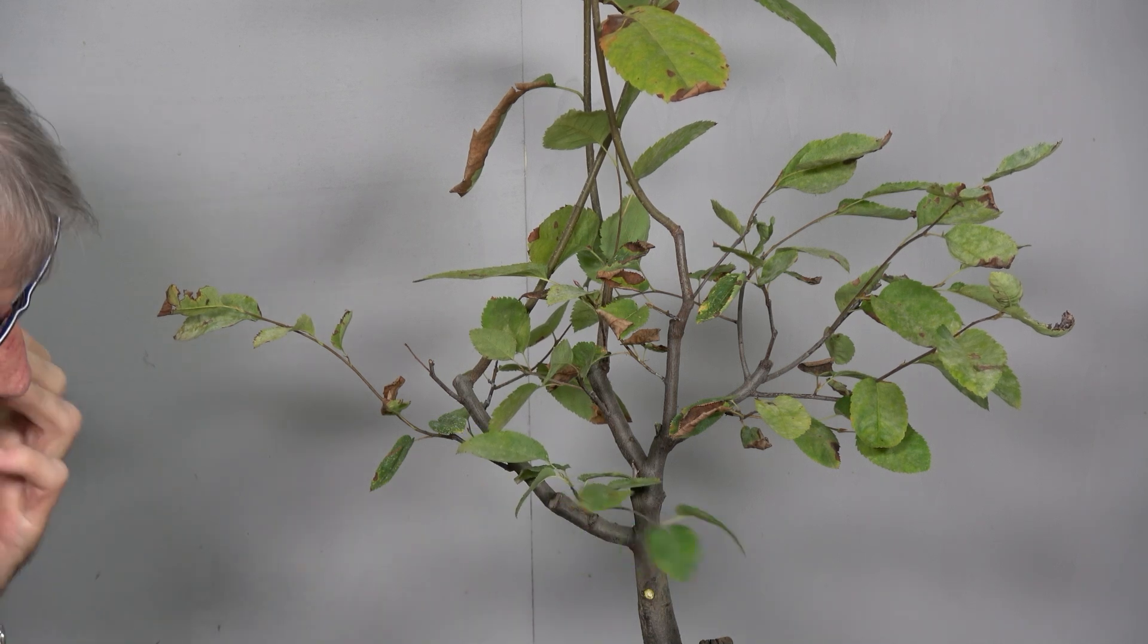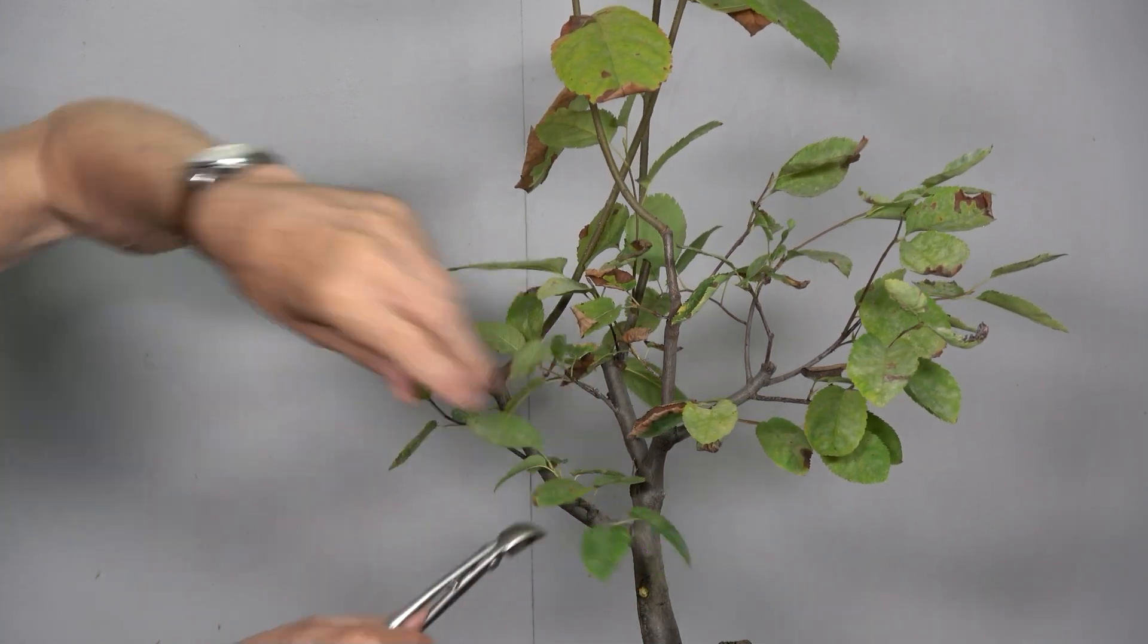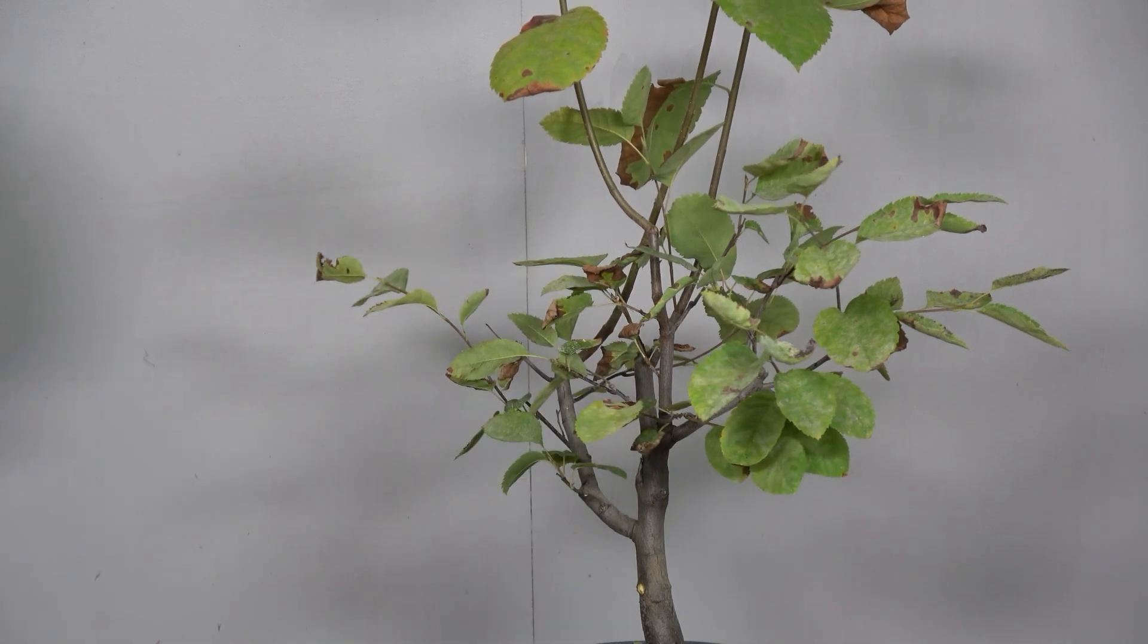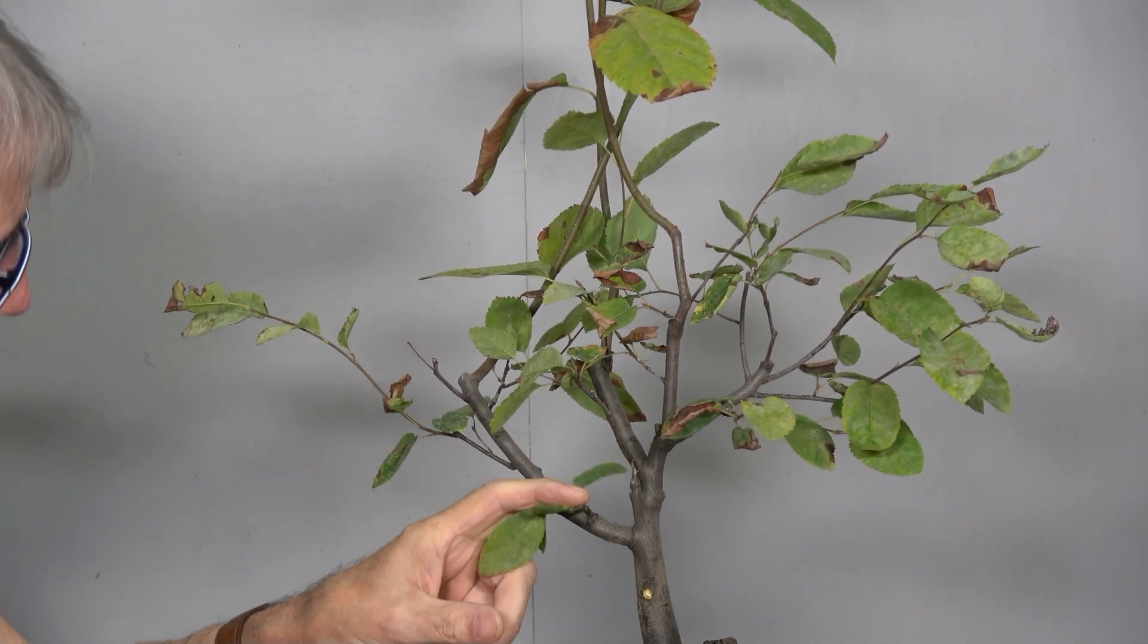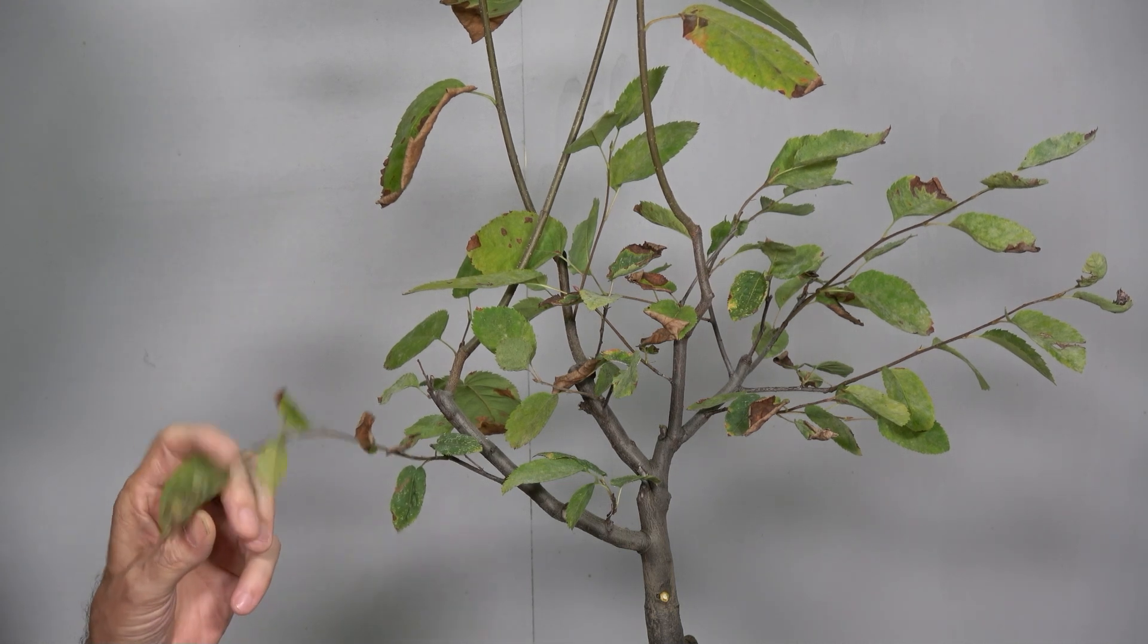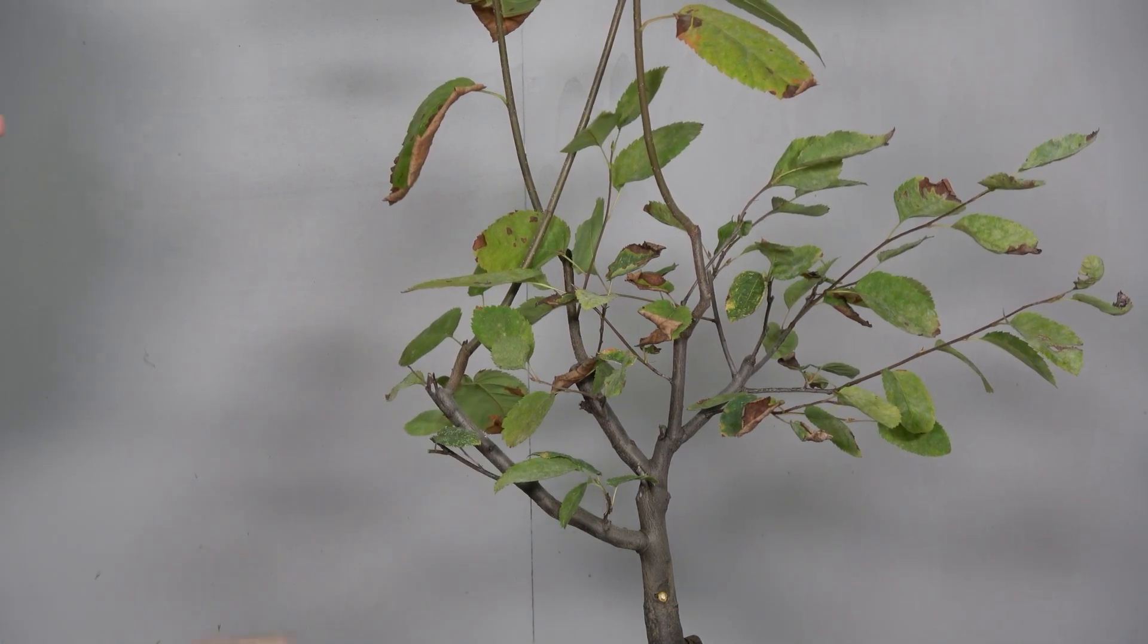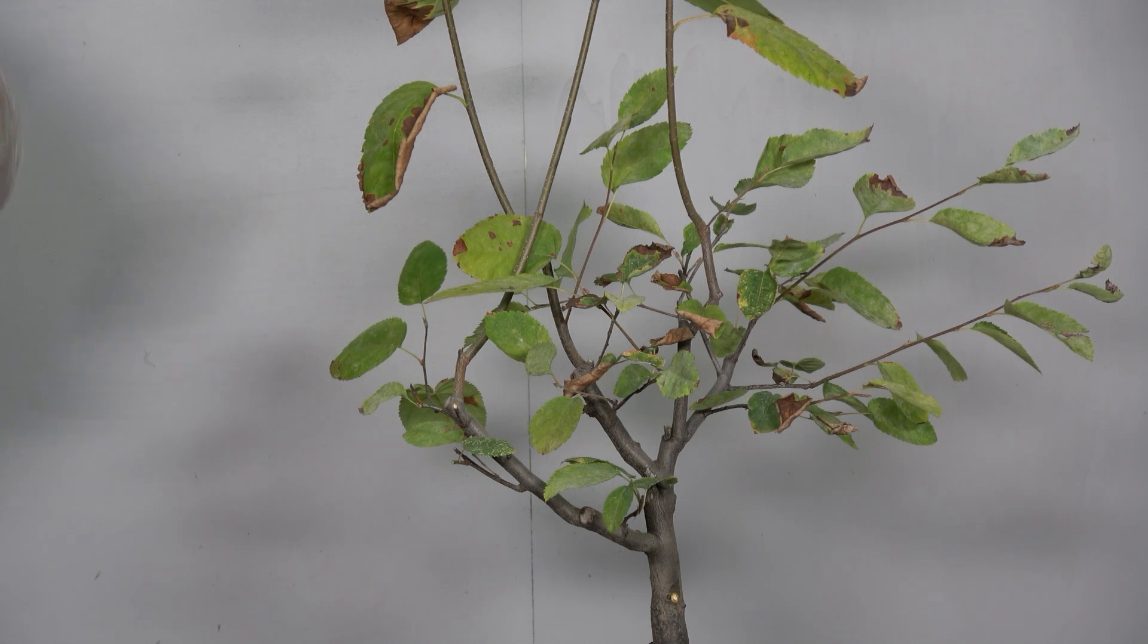Dann haben wir hier einen Ast. Den treibt hier rüber und treibt aber auch hier raus. Sprich, er wird hier etwas aufbauen. Dann gehe ich her und schneide den weg, wo er hier so rüber geht. Mal schauen, wie der sich hier macht. Dann haben wir hier als nächstes diesen hier. Den nehmen wir auch mal zurück. Bis hier. Hier haben wir einen. Der ist wahrscheinlich vertrocknet. Ja, den nehmen wir dann hier weg.